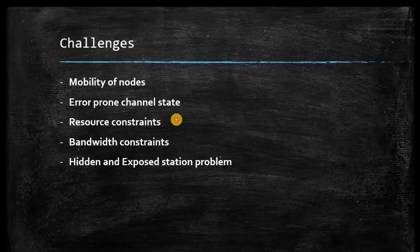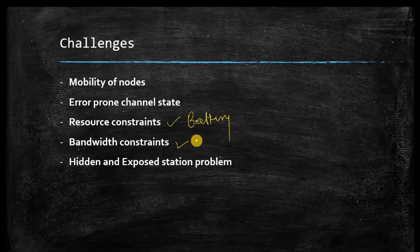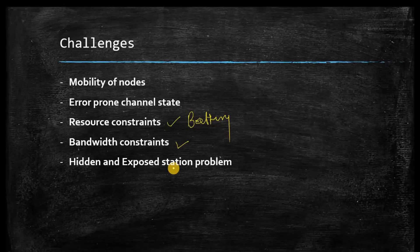The third challenge is resource constraints: wireless devices run on battery power, so there is limited battery power and minimum computing facility available in wireless devices. The fourth challenge is bandwidth constraints: compared to wired networks or access-point-based wireless networks, bandwidth is very limited inside MANET, so the data transfer rate is very low. A fifth challenge is the hidden station and exposed destination problem, which can cause collisions in data delivery. The routing protocol must handle collision avoidance.